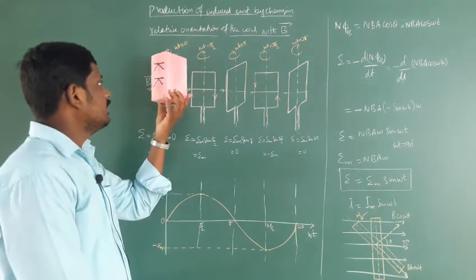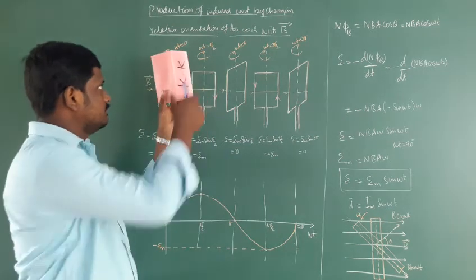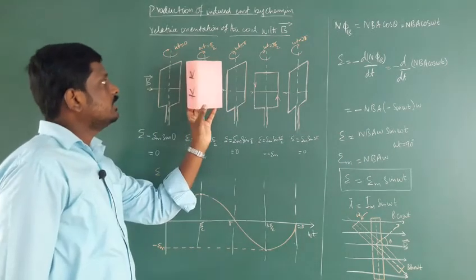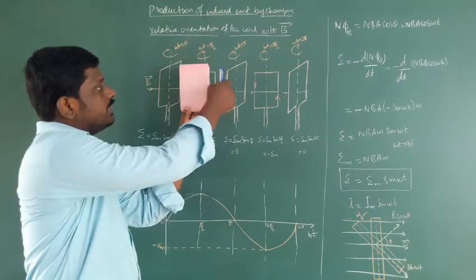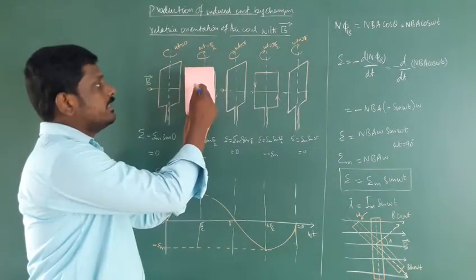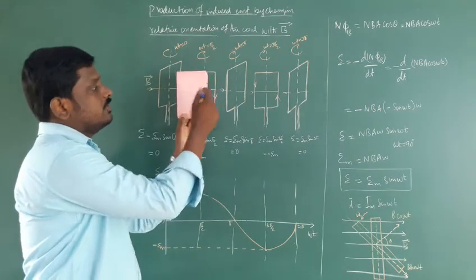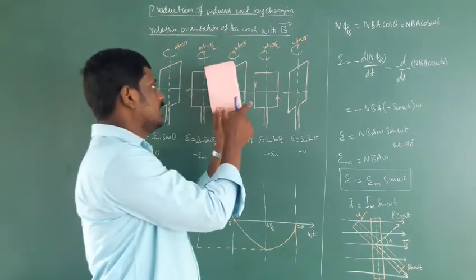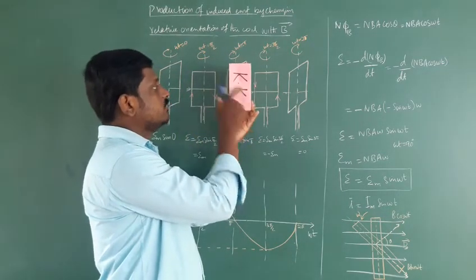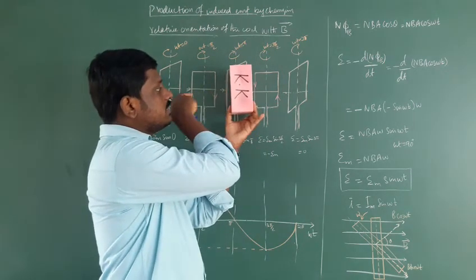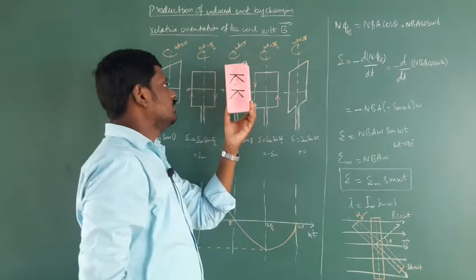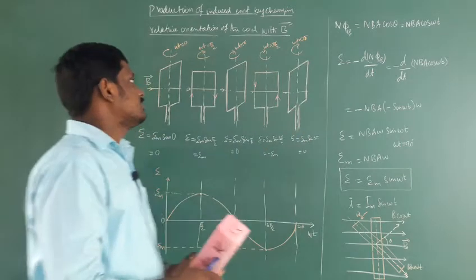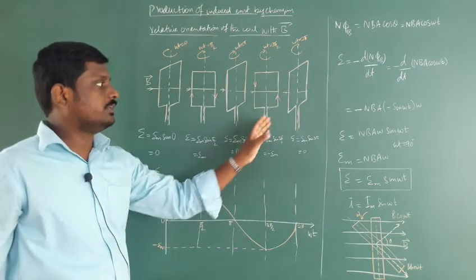After some time, the coil is rotated 90 degrees in the anticlockwise direction. Now the magnetic field goes inwards and the direction of the magnetic field and n-cap are perpendicular to each other in this second position. After that it rotates again another 90 degrees, completing a full rotation through 0, 90, 180, 270, and 360 degrees.